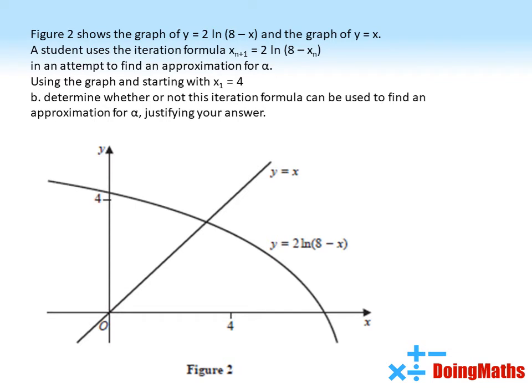Figure 2 shows the graph of y = 2 ln(8 - x) and the graph of y = x. A student uses the iteration formula x_{n+1} = 2 ln(8 - x_n) in an attempt to find an approximation for α. Using the graph and starting with x_1 = 4, determine whether or not this iteration formula can be used to find an approximation for α, justifying your answer.